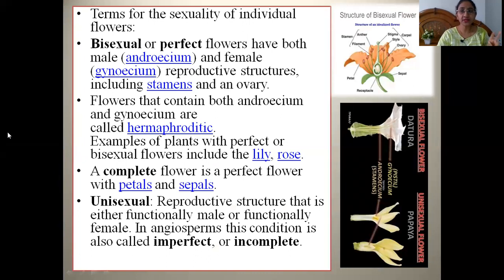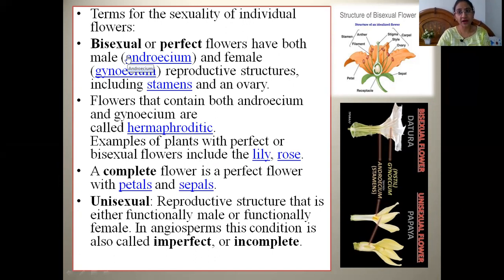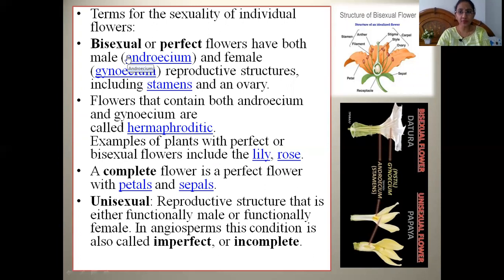A bisexual or perfect flower has both the male part — the androecium — as well as the female part — the gynoecium — along with petals, sepals, ovaries, style, and stigma. All reproductive parts are present in the same flower in perfect functional condition. That flower is called a perfect flower.